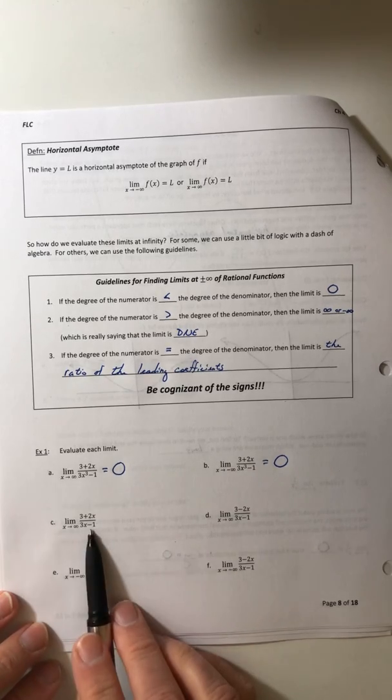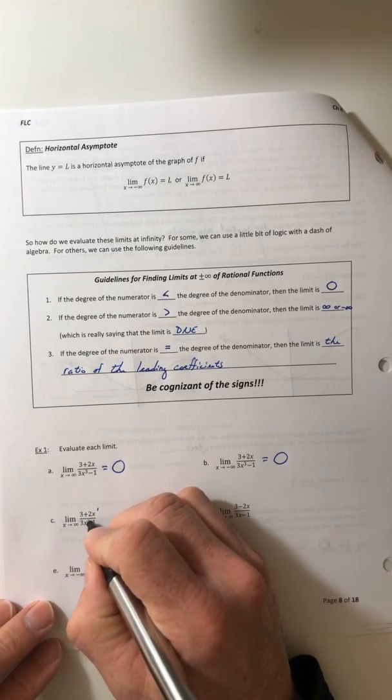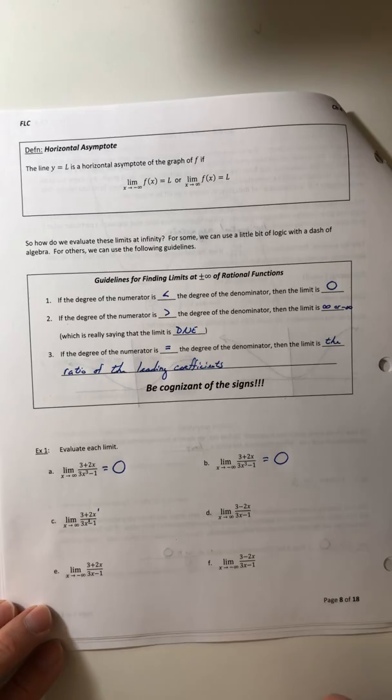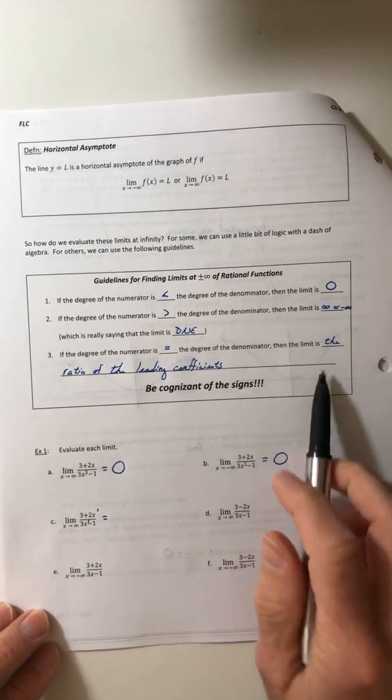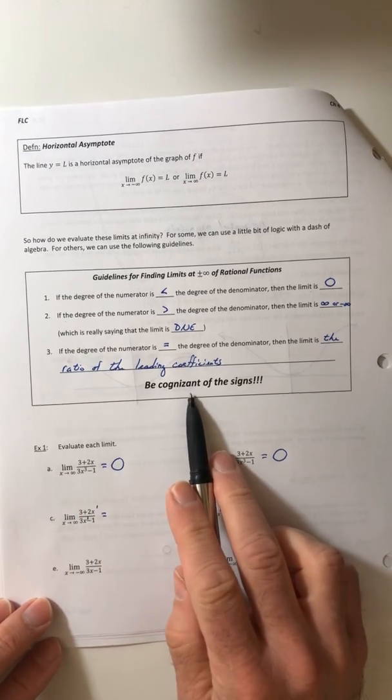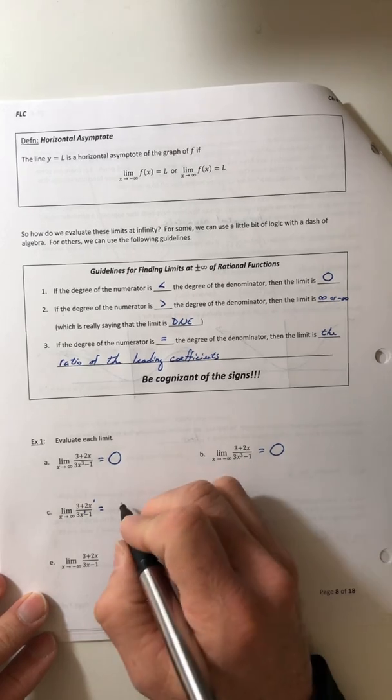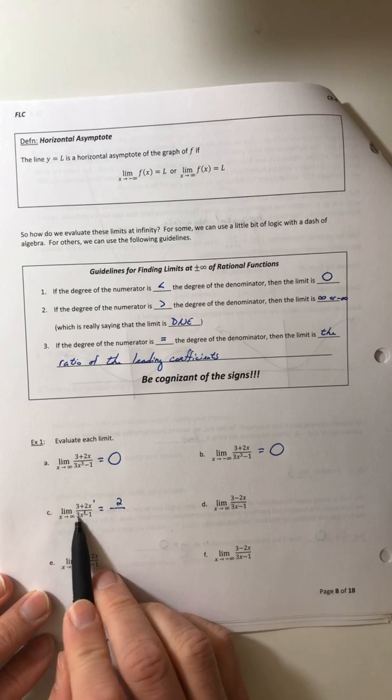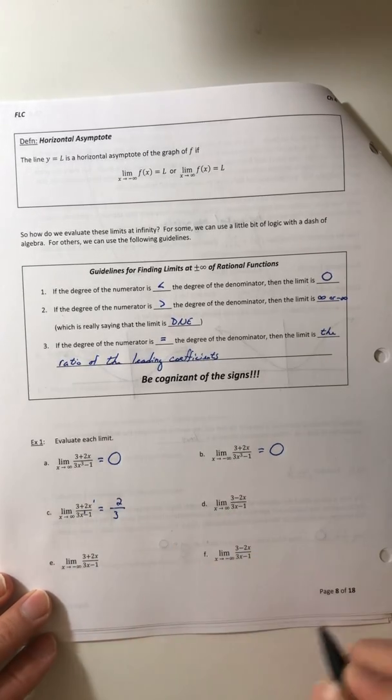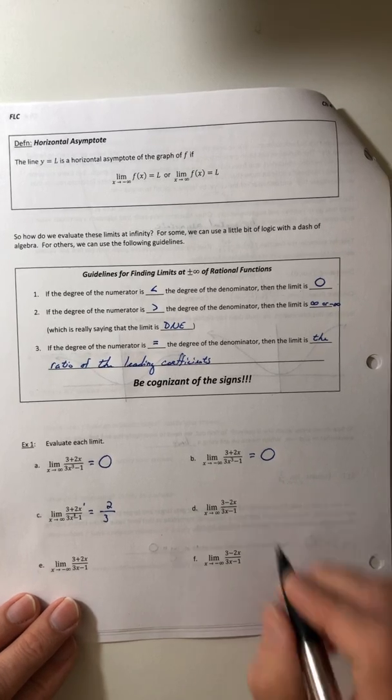Okay, so let's look at part c. Almost the same function, but we changed the denominator to 3x minus 1. So now the denominator and the numerator have the same degree. It's a tie. So they're equal. So the guideline says, hey, it's the ratio of the leading coefficients. So the leading coefficient of the top is 2. The leading coefficient of the denominator is a 3. So it's two-thirds.